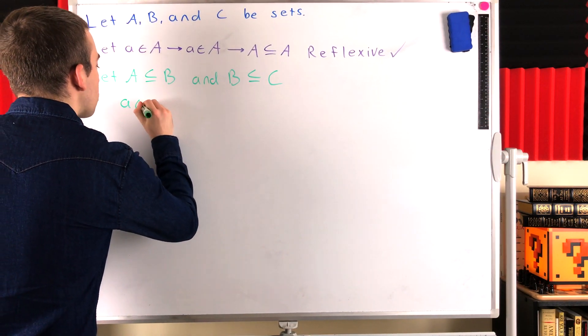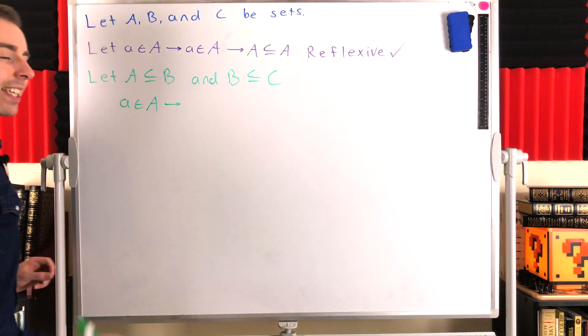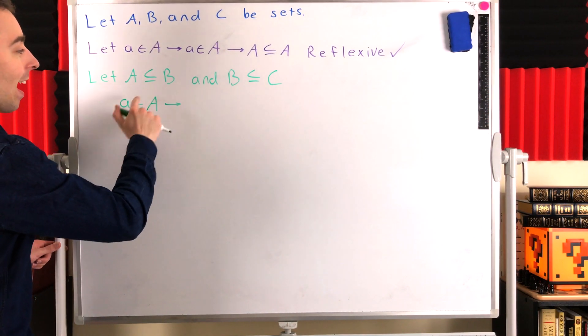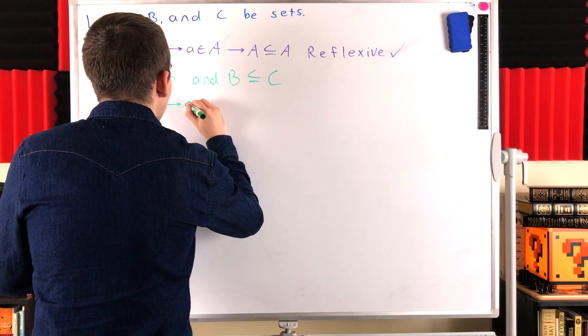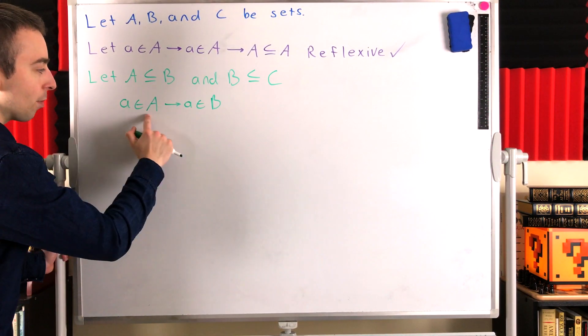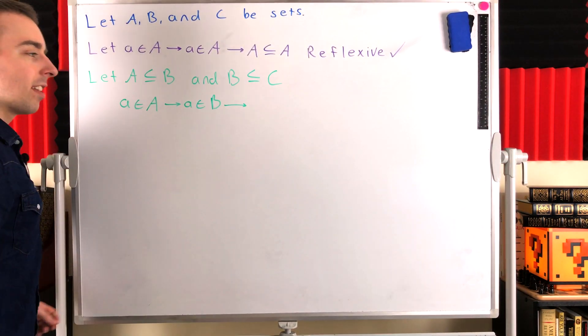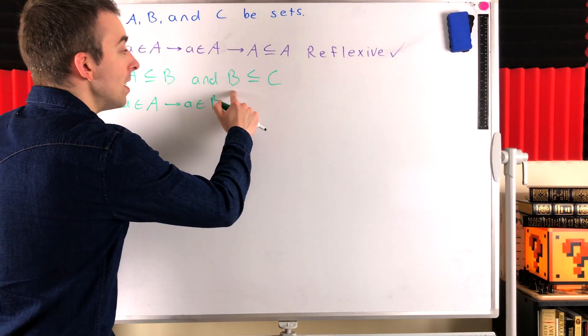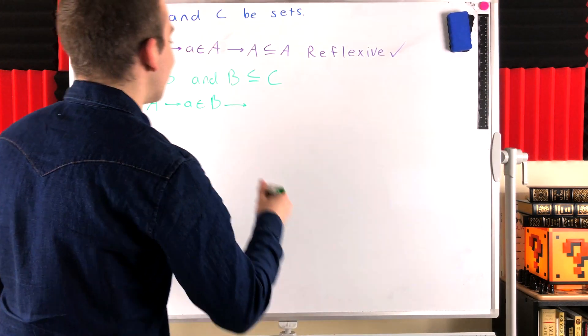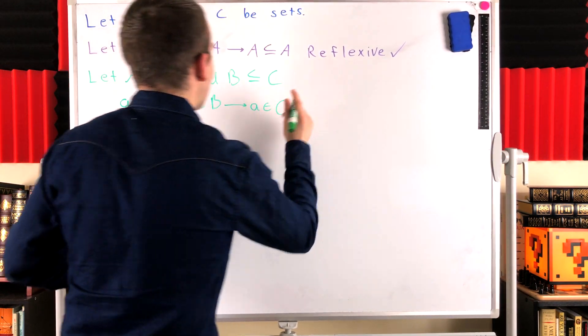If we just take an arbitrary element, little a, from our set big A, what do we know about little a? Well, we know since the set A is a subset of B, little a has to be in B by definition of subset. So, since A is a subset of B, every element of A also is an element of B. If little a is an element of the set B, what else do we know? Well, the set B is a subset of C. So, every element in B is also in the set C.